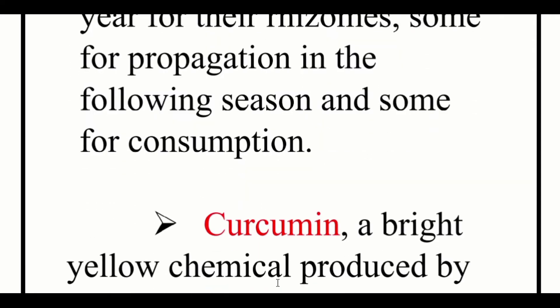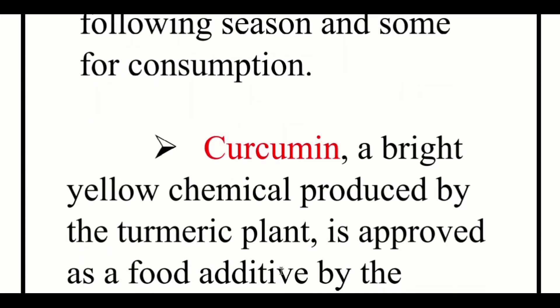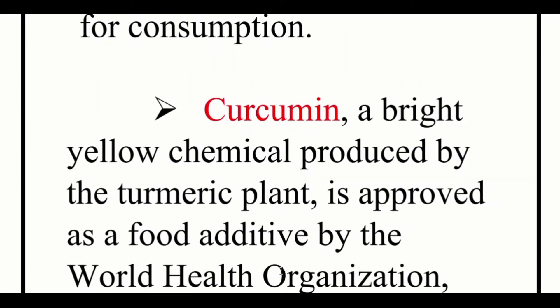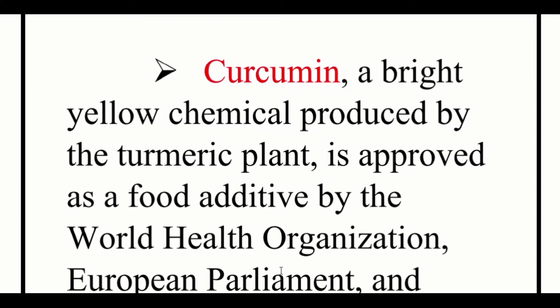Curcumin is a bright yellow chemical produced by the turmeric plant and is approved as a food additive by the World Health Organization, European Parliament, and United States Food and Drug Administration.